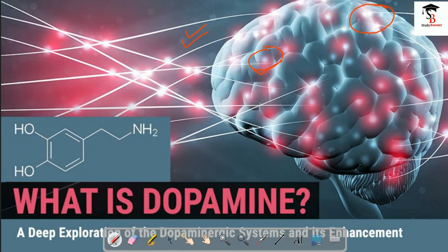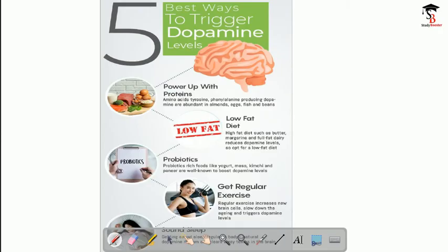You should control your mind. How will you control it? You should read good books and do activities — you should practice. We have to do things the best way to trigger dopamine levels positively. Power up with protein. We should have a low fat diet, meaning we keep our diet under control.